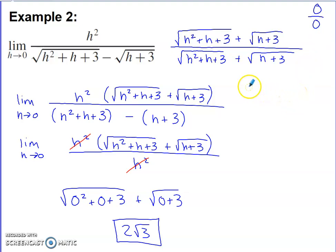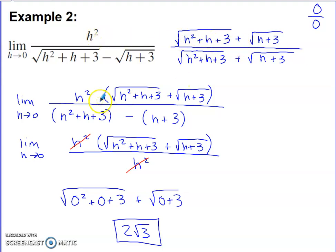I'm going to use the same conjugate strategy here, but I want to make sure you're aware it can work when there's more going on within the limit. I'm multiplying by the conjugate of the denominator — same two roots, sign between them switched to addition. Top and bottom both get multiplied by that, since I have to multiply by a form of 1 to maintain my mathematical value. I've written the numerator as multiplication still — same mindset as before — because I'll need to cancel something between top and bottom eventually.